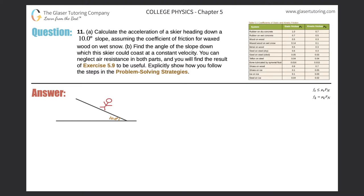Number 11, letter A: calculate the acceleration of a skier heading down a 10-degree slope, assuming the coefficient of friction for waxed wood on wet snow. Here we have a picture of our skier traveling down a slope. The velocity is pointing in the downhill direction — that's important because friction opposes motion.